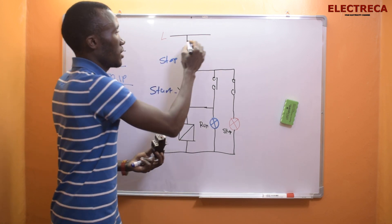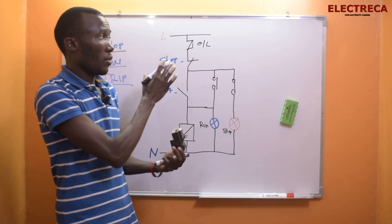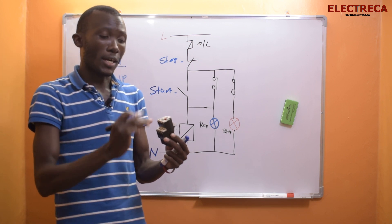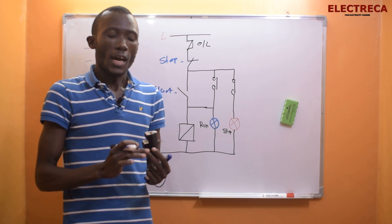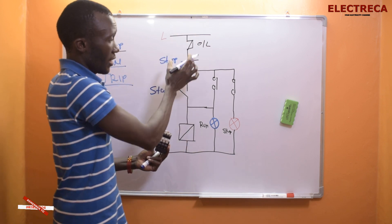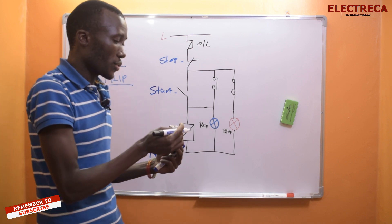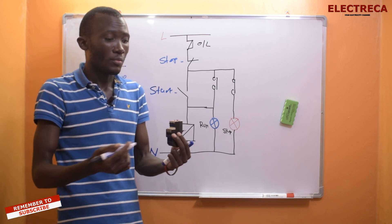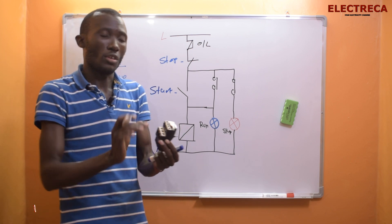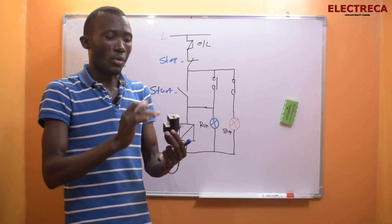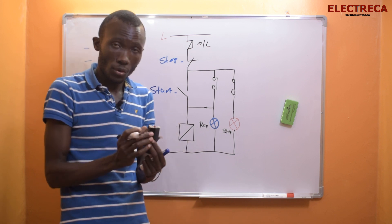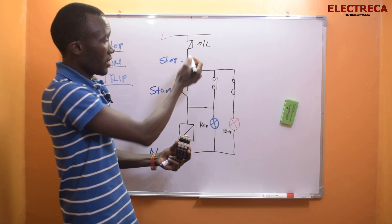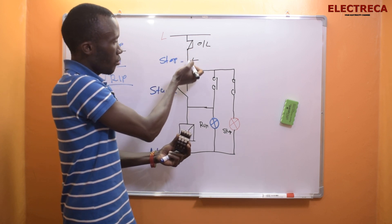This is an overload. Now how do we connect an overload? This overload has got two sets of contacts - it has normally closed and normally open contact. When we are connecting in our circuit, we use normally closed. This normally closed operates the circuit and de-energizes the circuit in the event of any fault. In case a fault occurs, the normally closed becomes open and then the open one becomes closed.